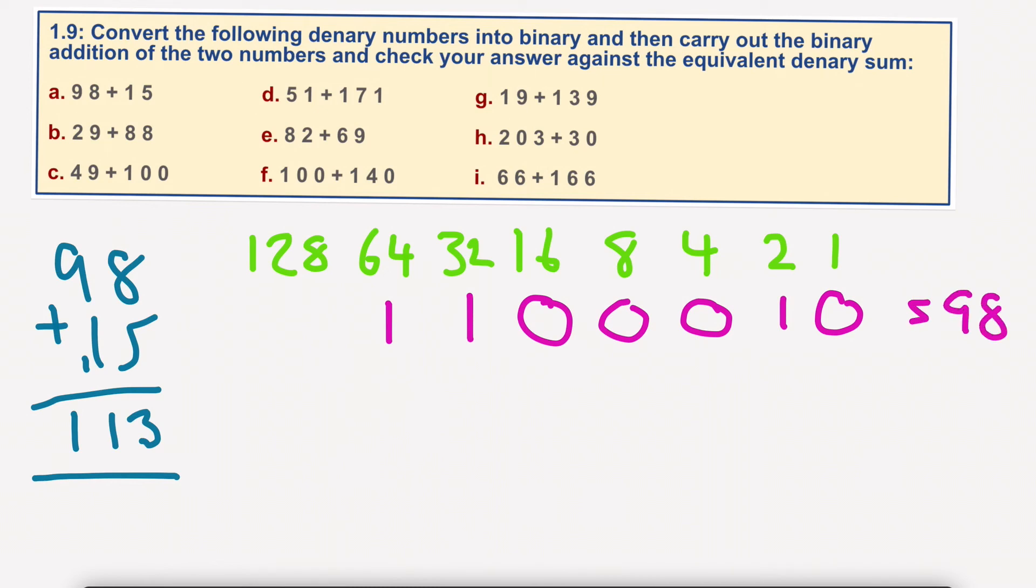So, 15 obviously is 1, 1, 1, 1. 0 plus 1 is 1. 1 plus 1 is 2. 0, 1. 1 plus 1 is 2. Carry the 1. 1, 2, carry the 1.